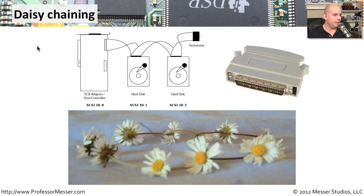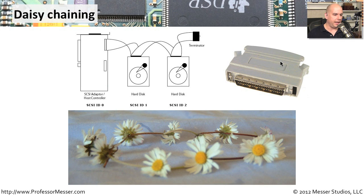Once everything is plugged in, it looks something like this: a SCSI controller at ID 0, then SCSI ID 1 (a hard disk), then another hard disk — all chained together with different SCSI IDs, and at the end of the chain a terminator. These terminators often have a little light so you can see they are active. The term 'daisy chain' actually comes from the idea of taking daisies and connecting them to each other to wear as bracelets or on your head — and that same concept was applied to plugging all these devices together in sequence.